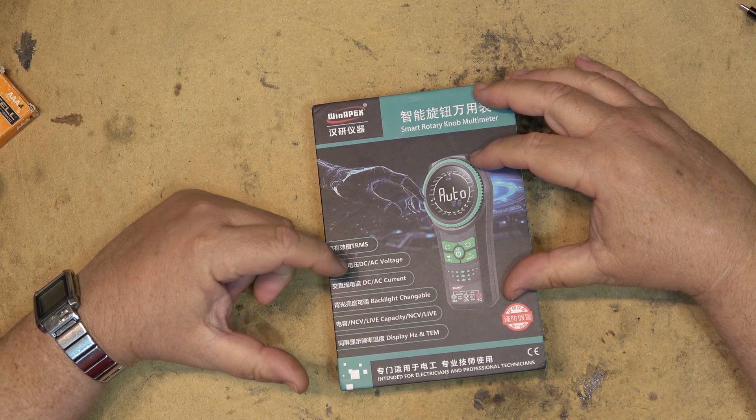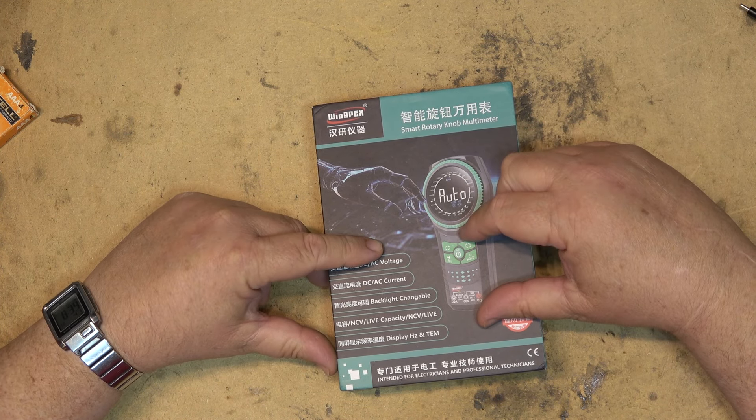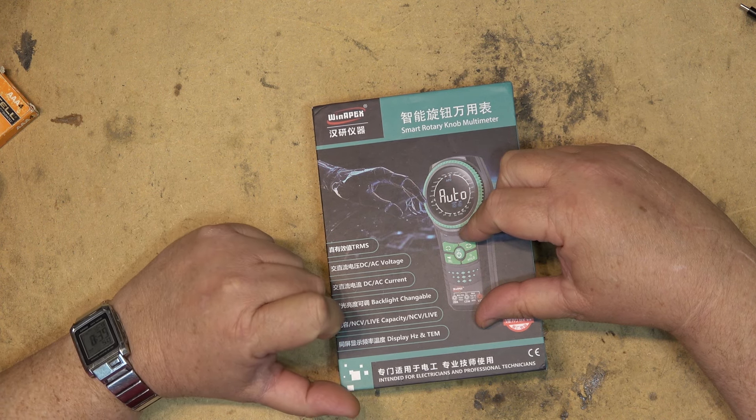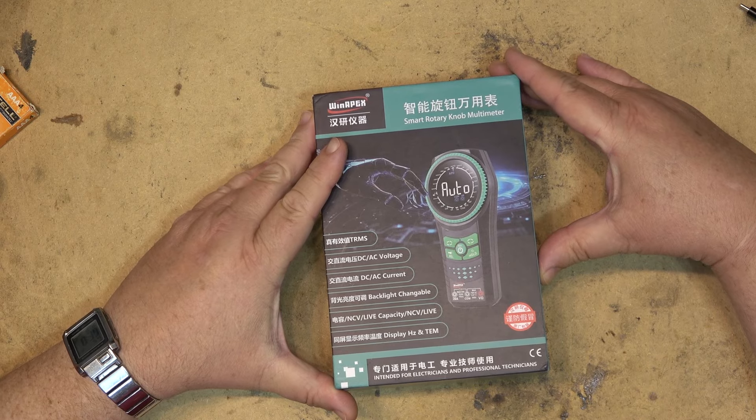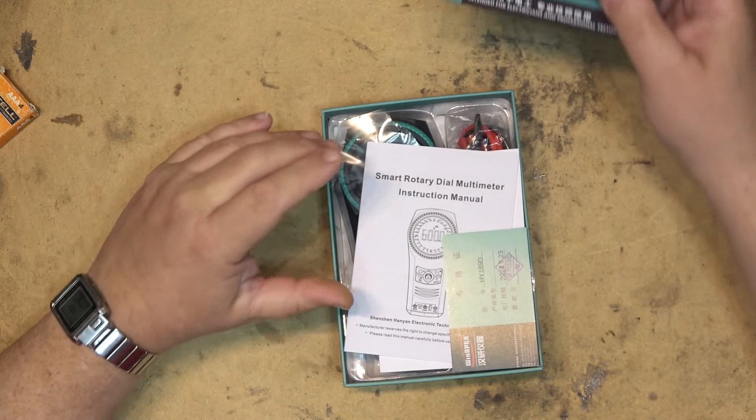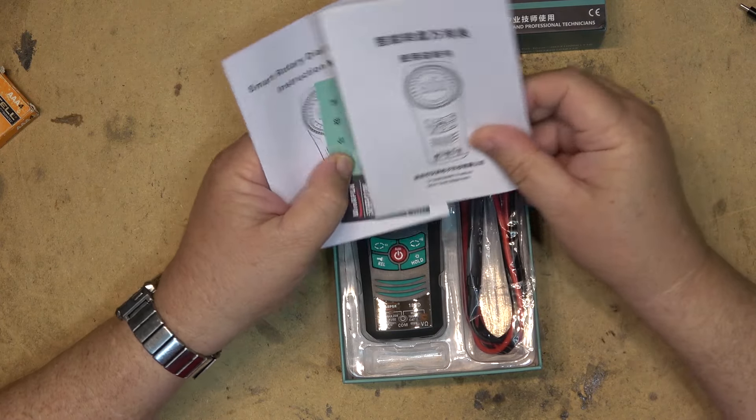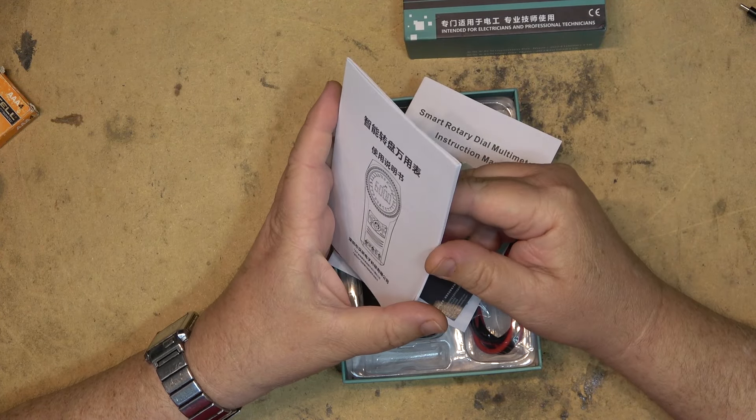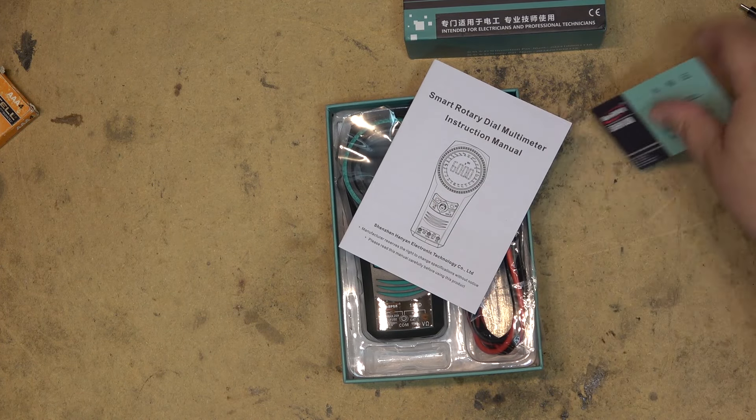This is a new multimeter that I got from Banggood. It's a Winapix and it's true RMS AC/DC voltage, AC/DC current. It's got a backlight for the display, a non-contact voltage detector, and it'll display frequency as well for your AC. It's a rotary knob multimeter.